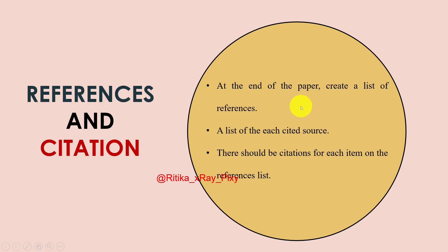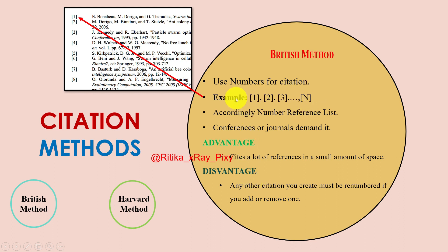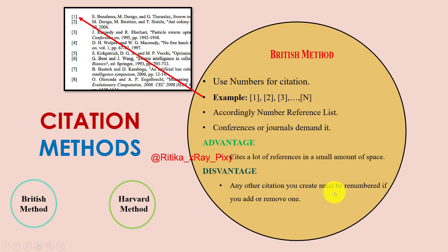At the end of the research paper, create a list of references containing each cited source. There should be a citation for each item on the reference list. There are two methods used for citation: the British method uses numbers for citations, which is used in conferences and journals. An advantage is it occupies a small amount of space, but a disadvantage is that whenever you add or delete any citation, you need to renumber.